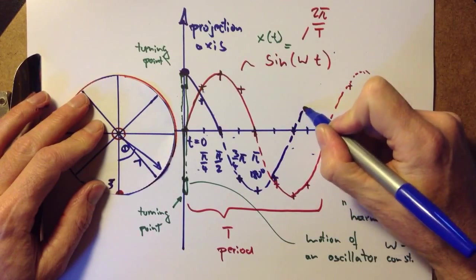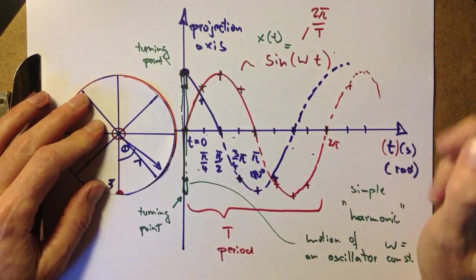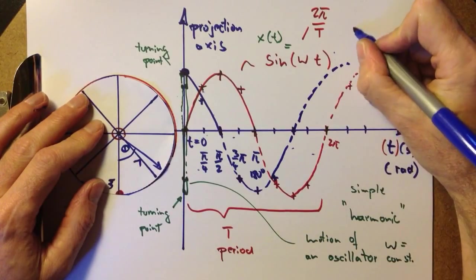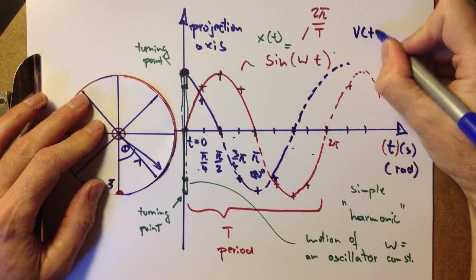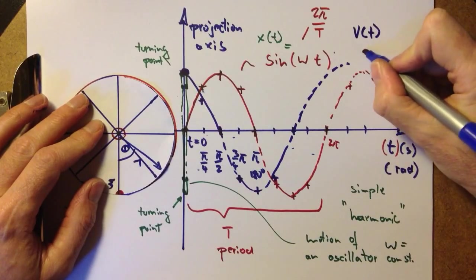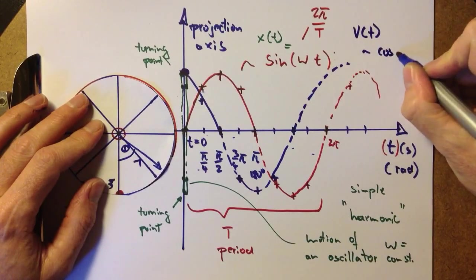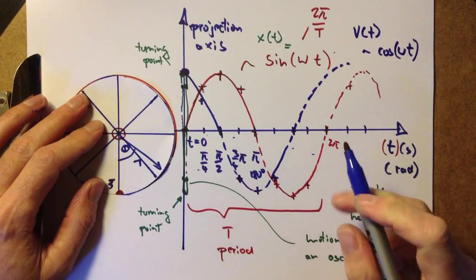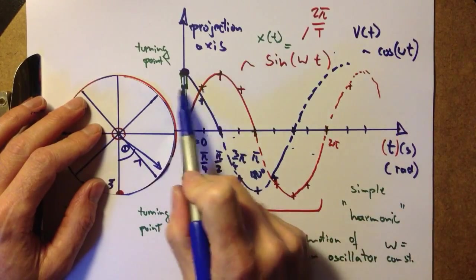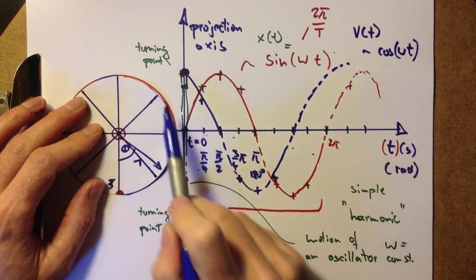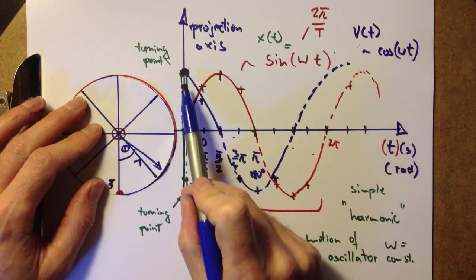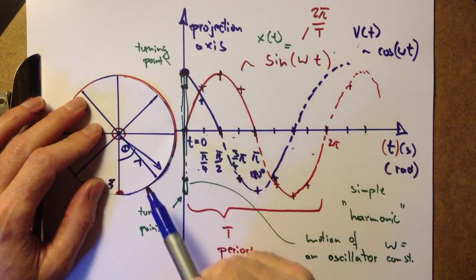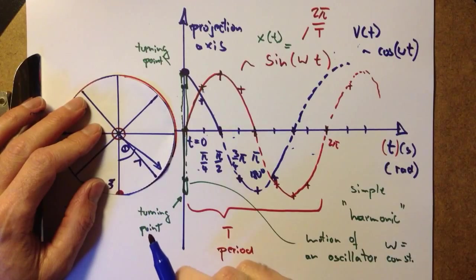And you can see this is also a trigonometric function. In fact, it is the cosine function. So the v of t is proportional to the cosine of ωt. And the two functions are shifted by 90 degrees. The speed function follows the position function, the displacement function, by 90 degrees.